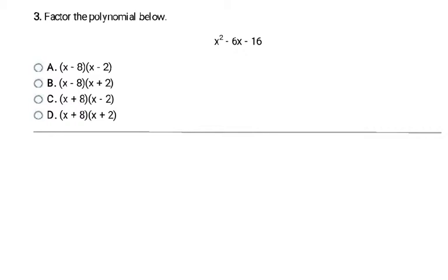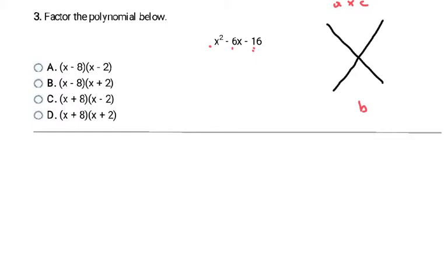So I'm going to see if I can break this up into two sets of parentheses. Your curriculum is going to show you how to do this certain ways; I'm going to show you using what I call the x-factor system. On the top of the x you're going to have a times c, and on the bottom you're going to write b. A means the first coefficient, c means the constant — the last term — and b means the middle coefficient. Here my a is 1 and my c is negative 16; 1 times negative 16 is negative 16, so I write negative 16 at the top of my x. Then my middle coefficient, negative 6, goes on the bottom.